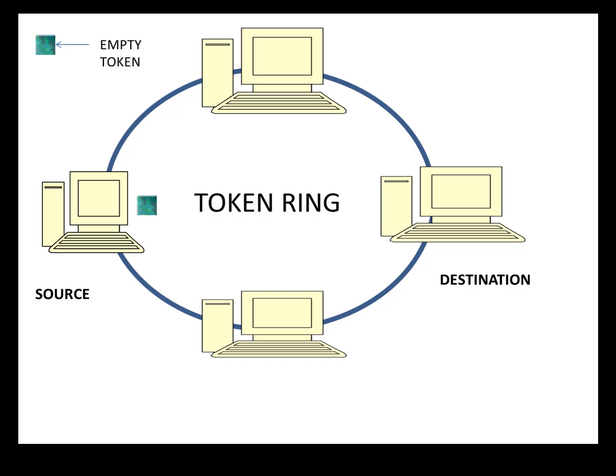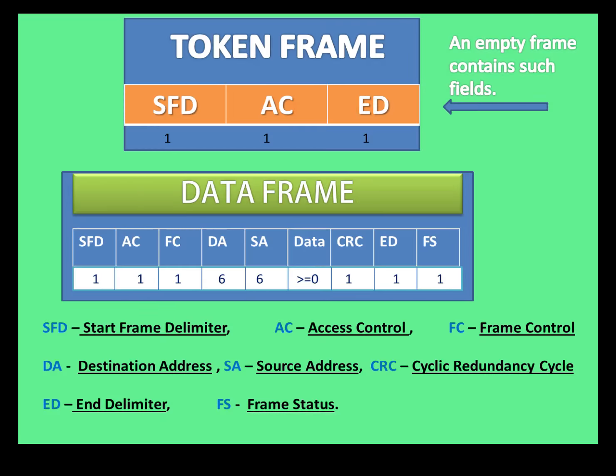If one workstation wants to send data to another, it will attach its data along with the Token Frame and this will be converted to a Data Frame. The Data Frame includes seven fields: SFD, AC, FC, DA, SA, Data, CRC, ED, and FS.